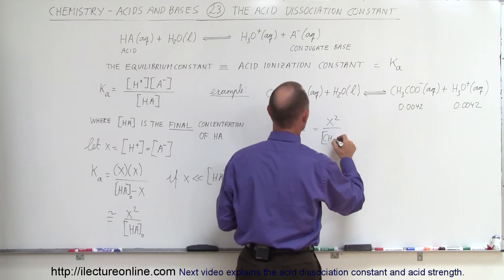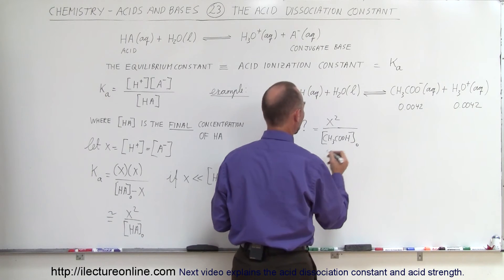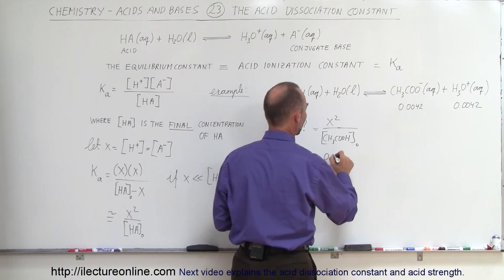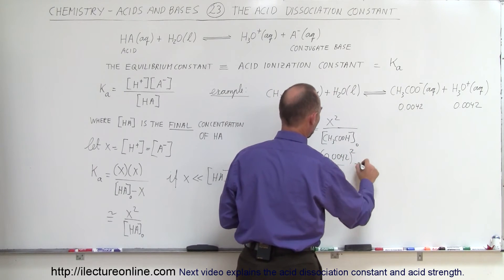CH3COOH, that's acetic acid, and we just put initial down there. So in this case, that would be equal to 0.0042 quantity squared divided by 1.